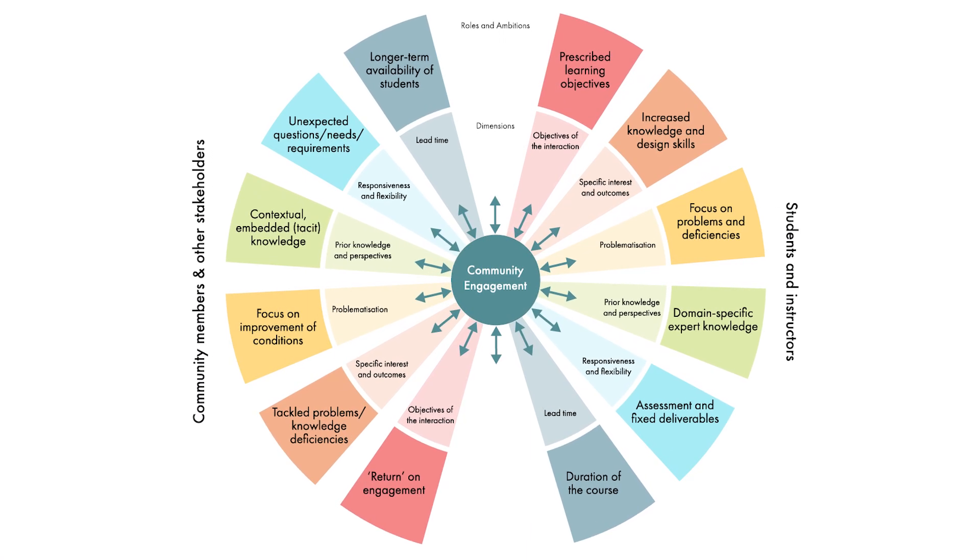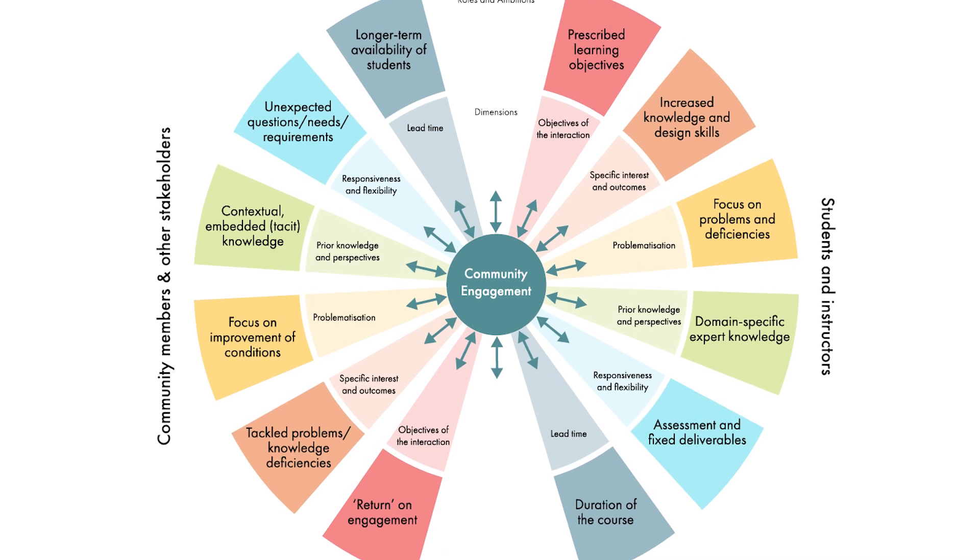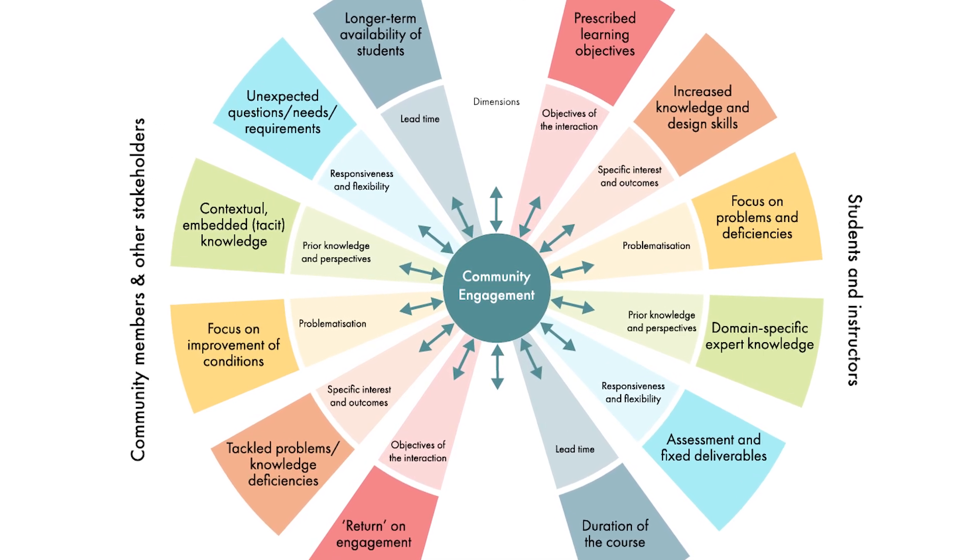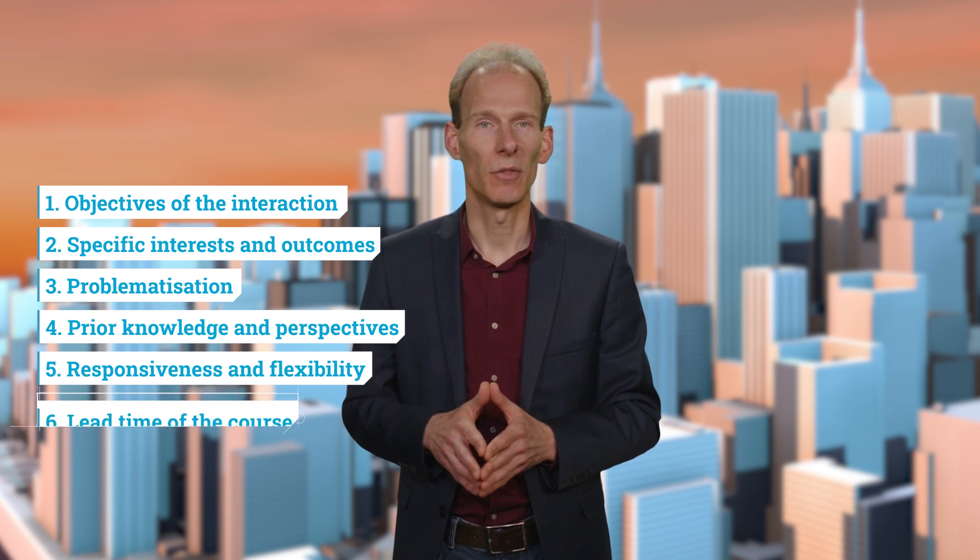In this series, I will present an encompassing framework which helps to understand the main challenges and conditions for local community engagement in student research. Each of the six main challenges will be explained in one video. These six challenges are: objectives of the interaction, specific interests and expected outcomes, problematization, prior knowledge and perspectives, responsiveness and flexibility, and finally, lead time of the course. The videos also offer some advice for course coordinators to deal with these challenges.